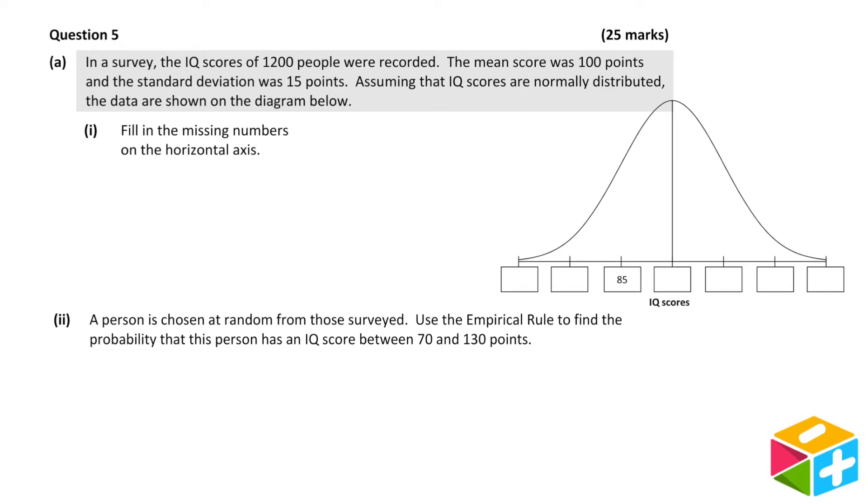Question 5. In a survey, the IQ scores of 1,200 people were recorded. The mean score was 100 points, and the standard deviation was 15 points. Assuming that IQ scores are normally distributed, the data are shown on the diagram.